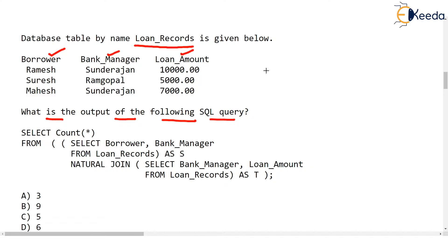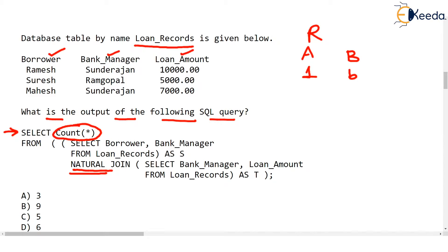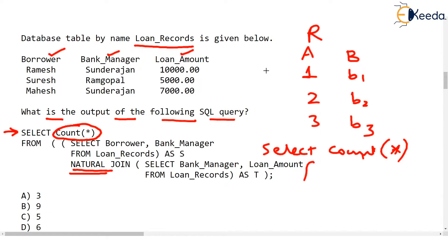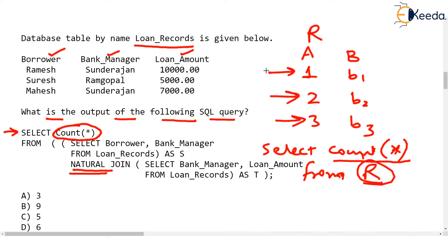This SQL query is using natural join. At the beginning of the query there is an aggregate function COUNT(*). Recall that if we have a simple relation R with two columns A and B with entries 1B1, 2B2, and 3B3, and we write a query SELECT COUNT(*) FROM R, then COUNT(*) simply counts how many rows are there in table R. So the answer of that query is going to be 3.